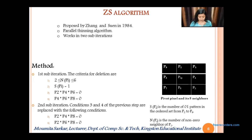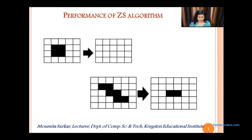Let's start with the ZS algorithm. The ZS algorithm is a parallel thinning algorithm and works in two sub-iterations. SP is the number of 0-1 patterns in the ordered set from P2 to P9, and N of P1 is the number of non-zero neighbors of P1. P1 is the pivot pixel. You need a central pixel P1 and these are its 8 neighbors. The performance shows that 2×2 squares are completely erased and this exact line is left with a 2-pixel wide horizontal line.